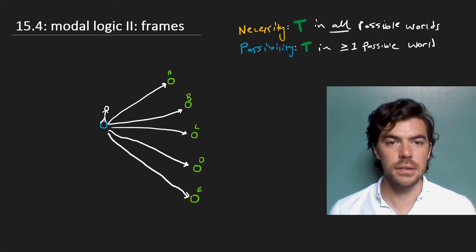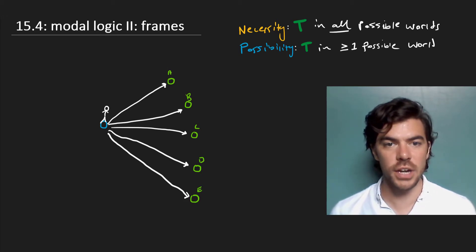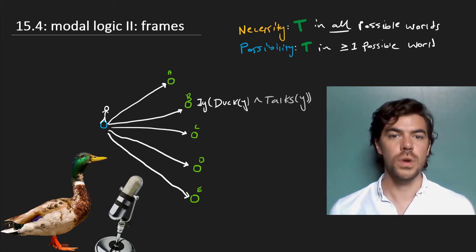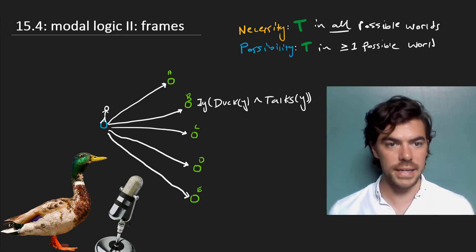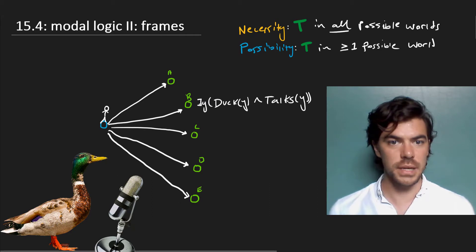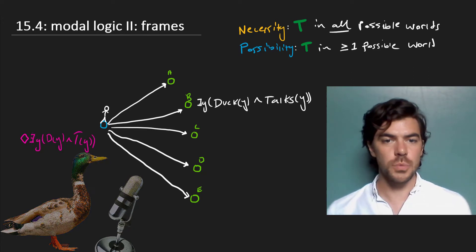I'm just going to give these all letters. So let's take B to be a world in which there are talking ducks. So we can say there exists a Y duck and is a talker. Well, then this is actually true in this world. And since it's accessible from our world back here, it's true thanks to B that it's possible that there are talking ducks.